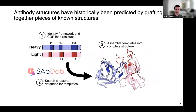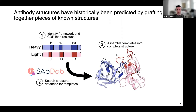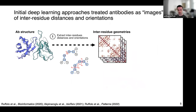Historically, researchers have predicted antibody structures by grafting together pieces of previously solved antibody structures — similar to homology modeling for regular proteins. The workflow involves parsing sequences into structural domains, searching those chunks against a database like SABDAB which collects antibody structures, and piecing together templates to form a complete structure. These approaches work well for CDR loops that adopt canonical folds, but have historically struggled on H3 because it's hard to find a template for longer loops, and structural diversity still limits accuracy.